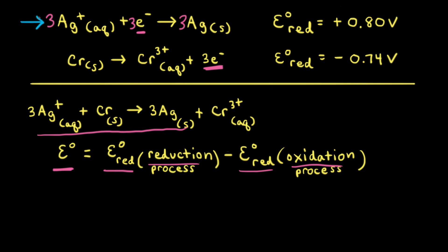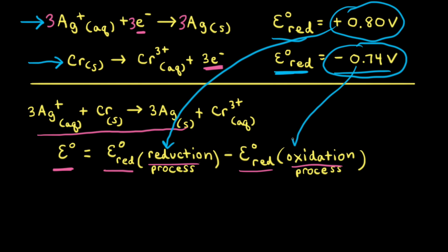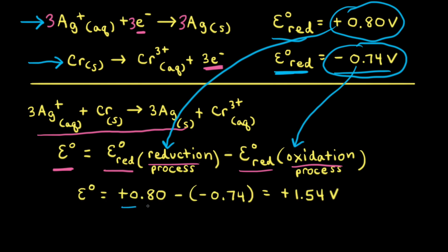For the reduction half reaction, the standard reduction potential is positive 0.80 volts, which we plug in for the reduction process. For the oxidation half reaction, the standard reduction potential from the table is negative 0.74 volts, which we plug in for the oxidation process. When we calculate, we get the same answer: the standard potential for the reaction is positive 1.54 volts at 25 degrees Celsius.